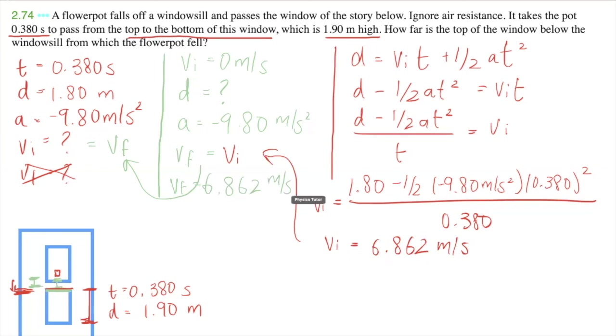And now we're going to use, now we have three knowns and one unknown, and we're going to solve for d. And the equation we're going to use here is vf squared equals vi squared plus 2ad. And we're interested in d. So it's going to be vf squared minus vi squared over 2a equals d. Once we plug in the values, we get...